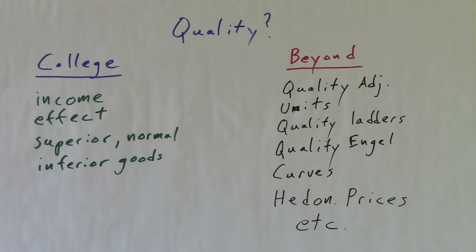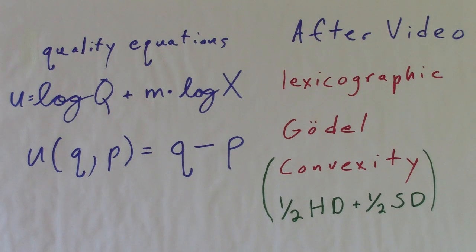There are a few concepts that try to answer the important question, what is quality? In college, you learn about the income effect, superior, normal, inferior goods. Beyond that, it's quality adjusted units, quality ladders, quality angle curves, hedonic prices, etc. Nothing consistent or coherent. What is quality in school or in the literature? There are a few equations with the undefined Q as a variable. Utility equals quality minus price is my favorite because of its simplicity. But they are all equally useless.